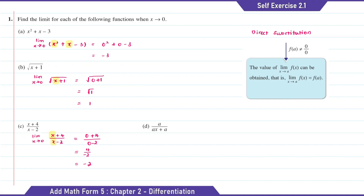Question D: we're going to substitute x with 0. It will be a over a times 0 plus a, which is equal to a over a, which is equal to 1.